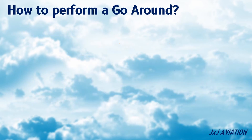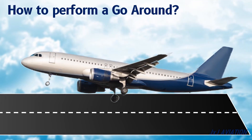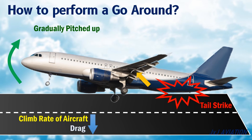When performing a go-around on bigger aircraft when it is close to the ground, a tail strike may occur, so the aircraft should be gradually pitched up. When the flaps are retracted, the climb rate of the aircraft decreases. However, the drag also decreases, which means the aircraft can fly faster and more lift is generated, which compensates for the loss of lift.